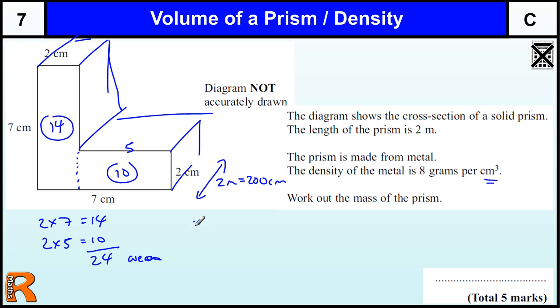And then the volume is going to be 24 times by 200 - oops, times by 200. And then that's centimeters cubed. So two 24s are 48, with two zeros on the end, so 4,800 centimeters cubed.